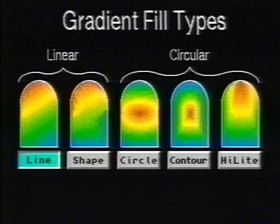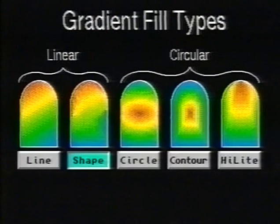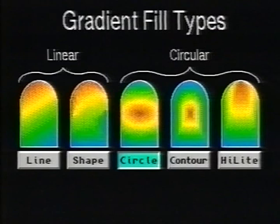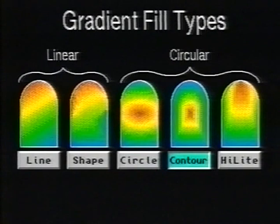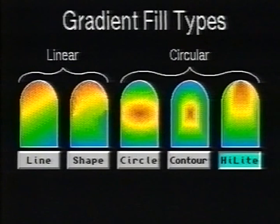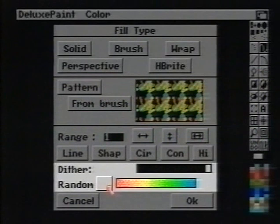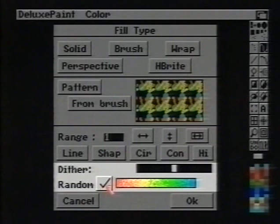Shaped fills the object with a linear gradient, taking the shape of the object into account, so gradient lines tend to follow the object's contours. Circular fills the object with a circular gradient, radiating outward from the point where you click. Contour fills the object with a gradient taking the shape into account, creating a topographical map effect. Highlight is similar to contour but optimized to create a highlight effect. Deluxe Paint draws patterned gradients by dithering, which reduces the contrast between adjacent colors without changing the colors themselves. When random is checked, you can adjust the degree of color mixing — drag the dither slider left or right to decrease or increase the amount of dither.